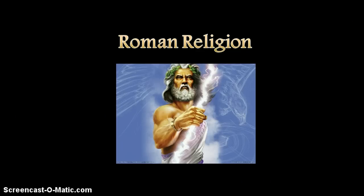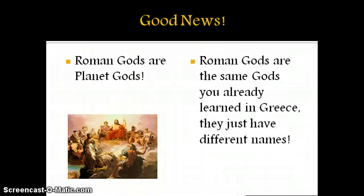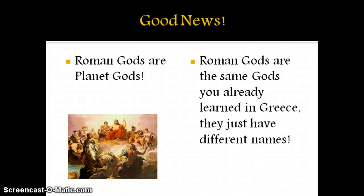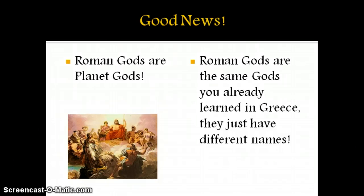All right, world history students, today we're going to talk about religion in ancient Rome. The good news about religion in ancient Rome is that you know most of the gods and goddesses already because the Roman gods are the same gods you've already learned in Greece — they just have different names. The other good news is that most of the planets in our solar system are named after the Roman gods, so if you know the planets, you've already gotten a jump start on learning the Roman gods.